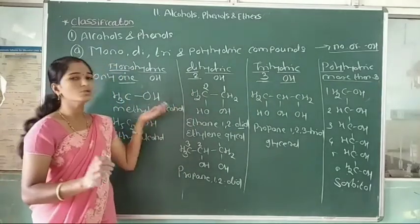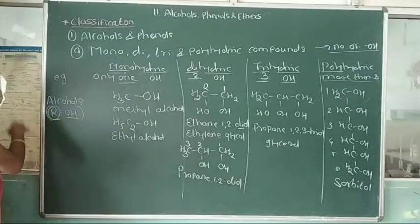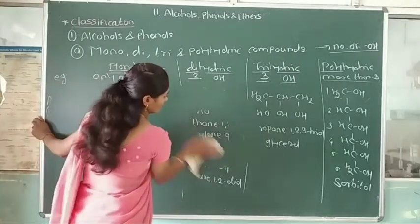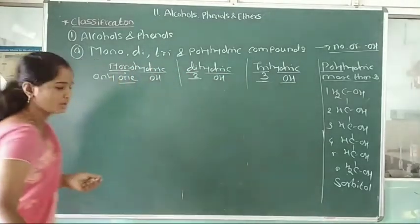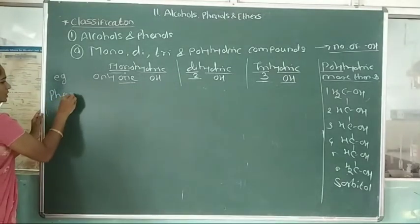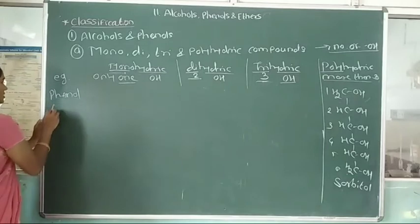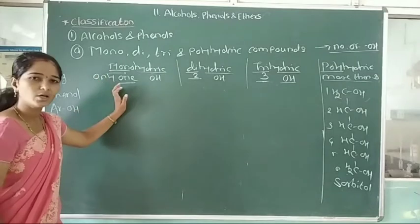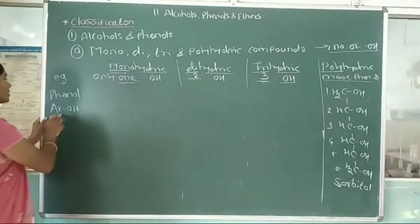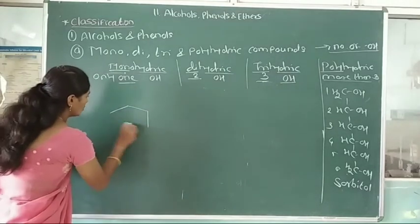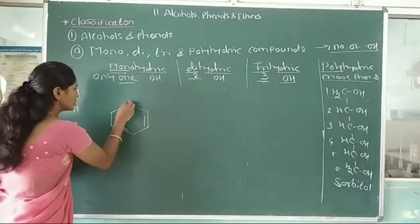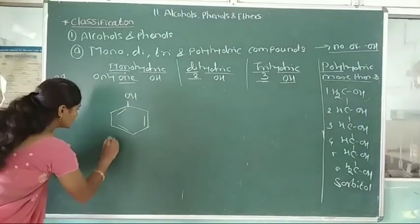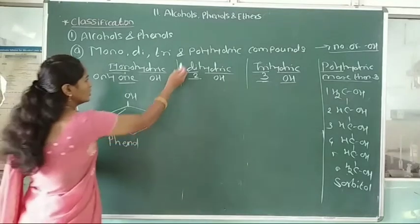These are some examples of alcohol on the basis of 1, 2, 3, and more than 3 hydroxy groups attached to saturated carbon atoms. Next, examples of phenol. The formula of phenol is represented as ArOH. In the first monohydric compound, only one hydroxy group is directly attached to the benzene ring — this compound is called phenol.